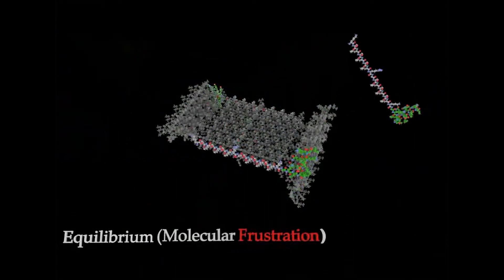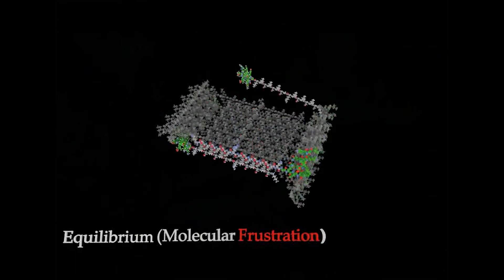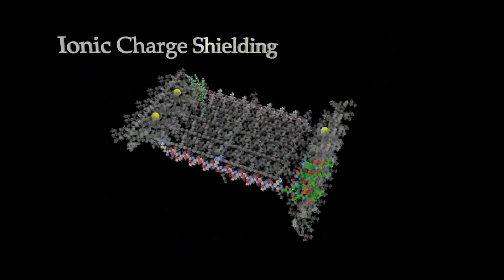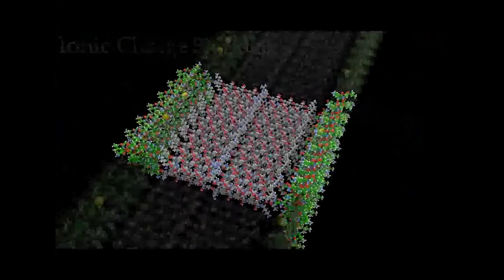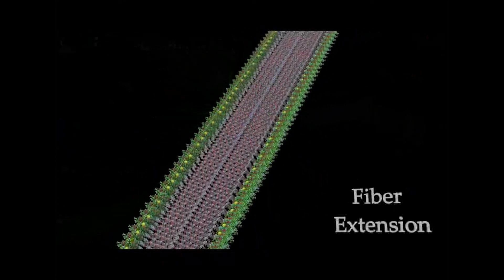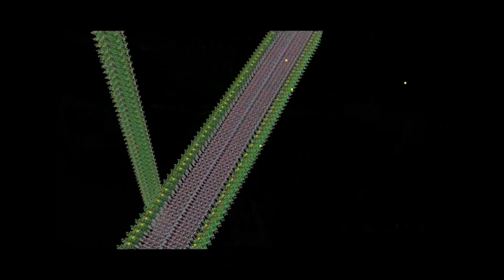So at first, these peptides are in equilibrium with one another, where they basically maintain a rather small size. But when we add the right kinds of salts to these things, they expand into much larger fibers.